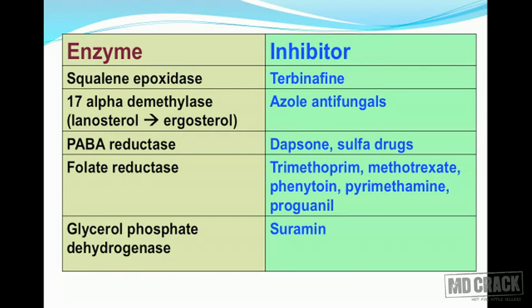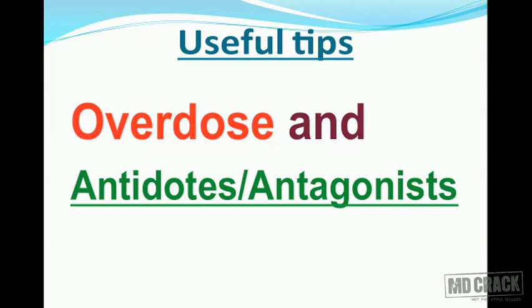The antifungal terbinafine inhibits squalene epoxidase in the fungus. Azole antifungals inhibit the conversion of lanosterol into ergosterol by inhibiting the enzyme 14-alpha-demethylase. PABA reductase in bacteria is inhibited by dapsone and sulfa drugs. Folate reductase enzyme is inhibited by trimethoprim, methotrexate, pyrimethamine, proguanil, and phenytoin. Glycerol phosphate dehydrogenase is inhibited by suramine. Quinolones inhibit topoisomerase II (DNA gyrase). Rifampin inhibits DNA-dependent RNA polymerase. Ethambutol inhibits arabinosyl transferase. Tyrosine hydroxylase is inhibited by metyrosine. Beta-lactamase in bacteria is inhibited by clavulanic acid, sulbactam, and tazobactam.